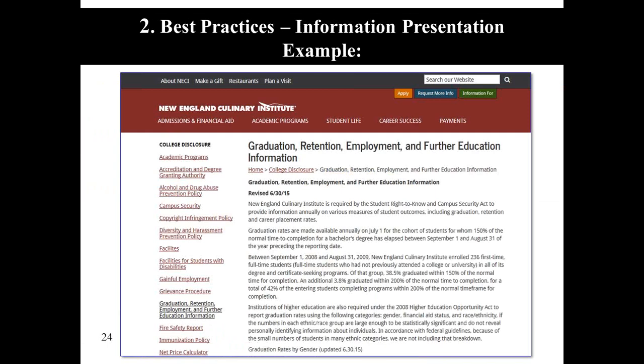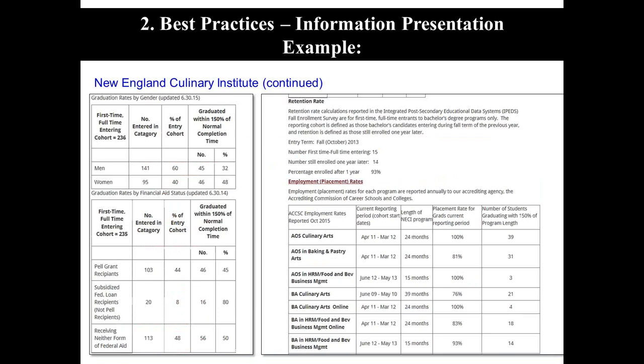Here's another example: each school can decide for themselves how they want to portray this information. New England Culinary Institute — and many of these schools shown are not only ACICS accredited but from regional accreditors as well — has disclosed what the Department of Education rules are and in that narrative disclosed the placement and graduate information. When you click on this link on the website, the list is very long and comprehensive, giving you information on graduation rates, placement rates, and retention rates for each program — very clear for the student to know what they can expect when they finish.